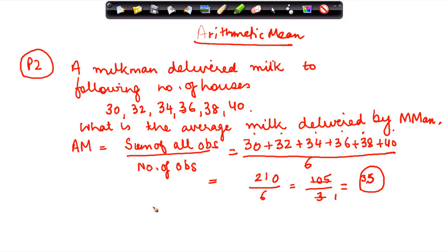So the average milk delivered by the milkman during a particular day is 35. If the milkman had delivered to 35 houses every day, then that times the number of days would equal the sum of all these. So the average milk delivered by the milkman is 35—he served 35 houses per day on average.